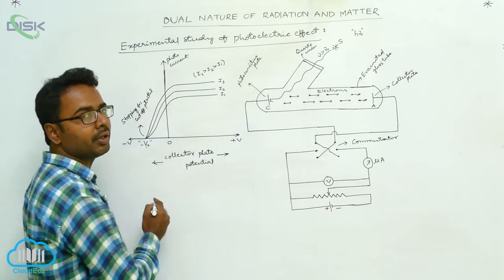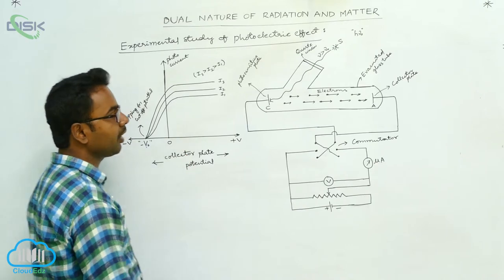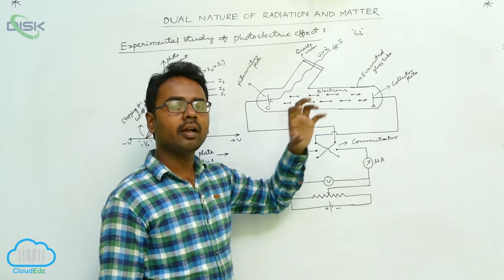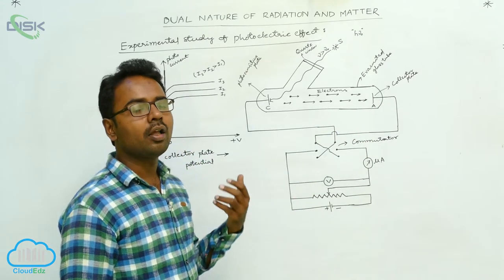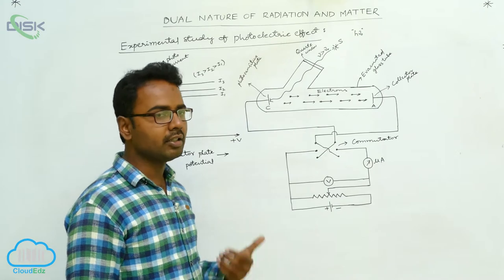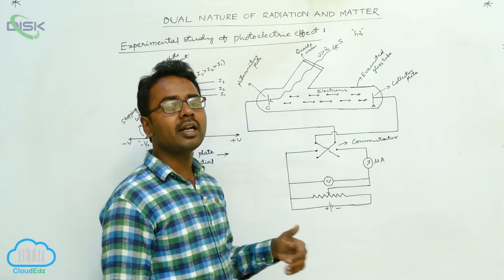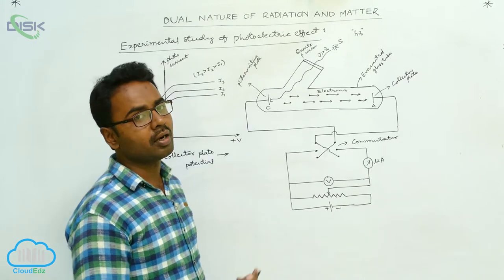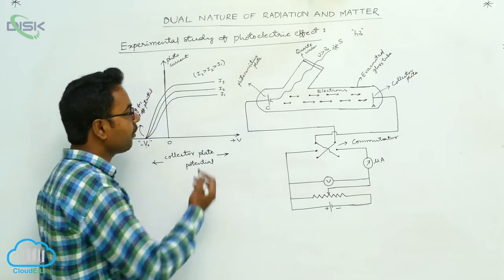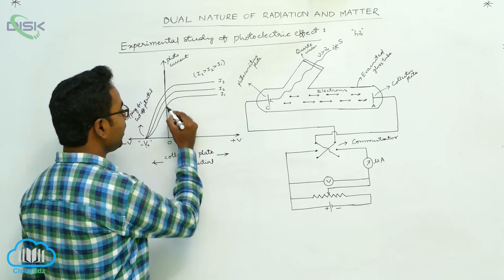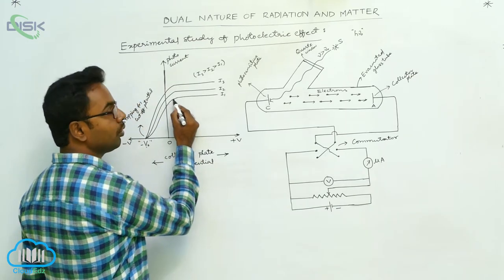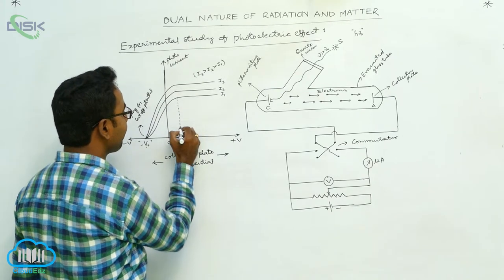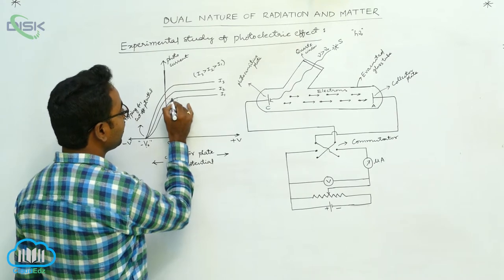As we increase the positive potential of the collector plate, it attracts more and more electrons. As the positive potential increases, it attracts more and more electrons, and if it attracts more electrons then photocurrent also increases gradually. From the graph it is clear that as positive potential increases, photocurrent also increases, and at a particular positive potential the photocurrent becomes maximum.